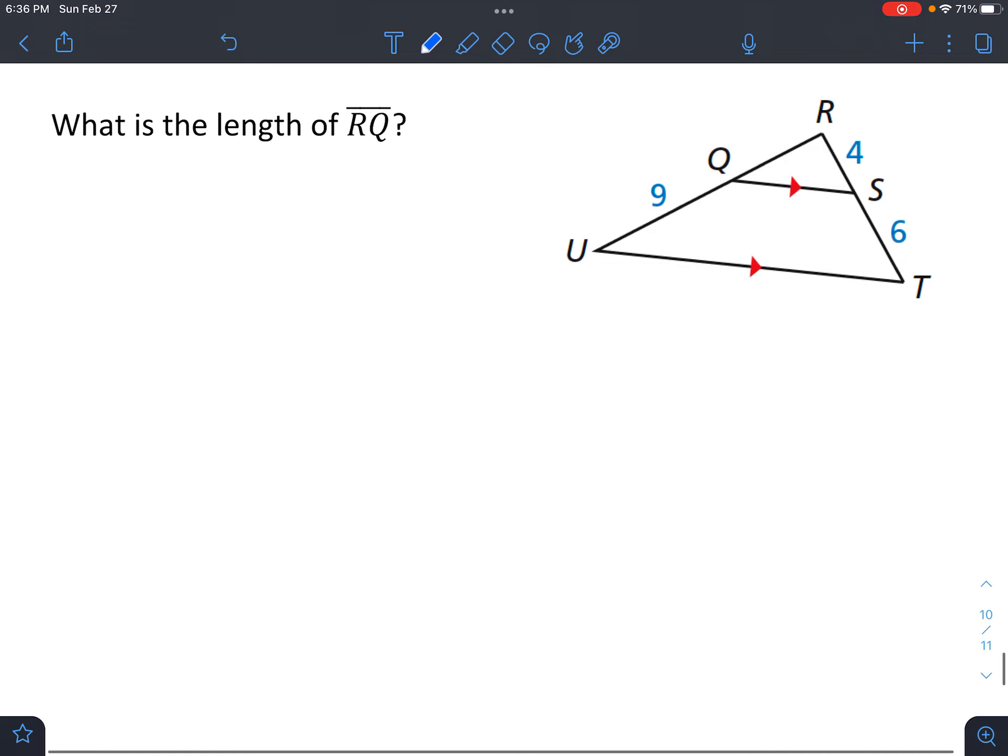All right, so let's just use an example of this. What's the length of RQ? So RQ, we're going to put maybe a little X here to represent that is what we're looking for. And we're given that these two lines are parallel, and you can see that it's in a triangle. So we can set this up as saying, well, X compares to 9. This part here compares to this part here, the same way that 4 compares to 6.